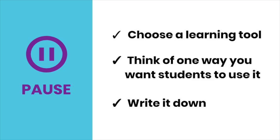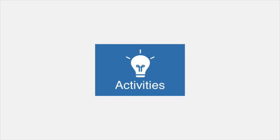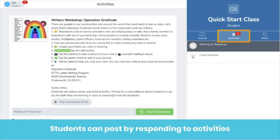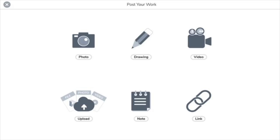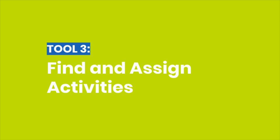Now, choose one learning tool and think of one way your students could use it. Pause the video now and write down your idea. The second way students can add to their journal is by responding to an activity. When you assign an activity to students — we'll cover that in just a minute — it'll appear in the Activities tab. To respond to an activity, students simply click the 'Add Response' button. Students have access to all the same great learning tools. Pause the video now and check out the Activities tab. There are tons of free activities ready for you to assign your students.